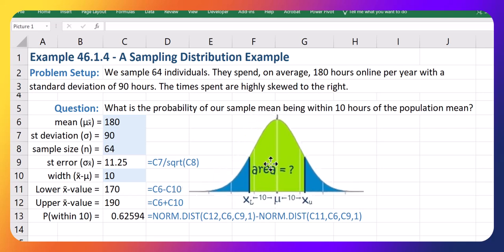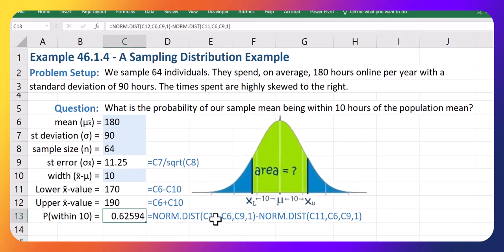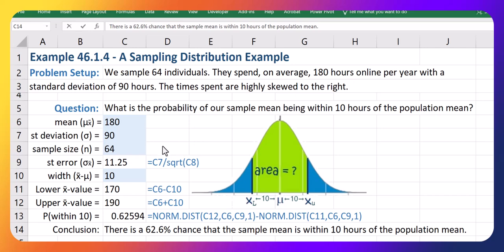So that gives us 0.6259, or conclusion here: there is a 62.6% chance that the sample mean is within 10 hours of the population mean. And that concludes this example. Thanks for watching.